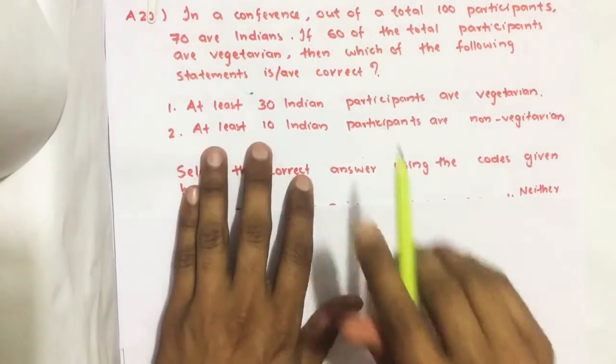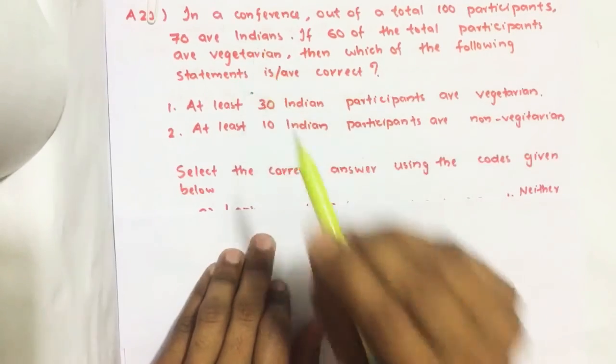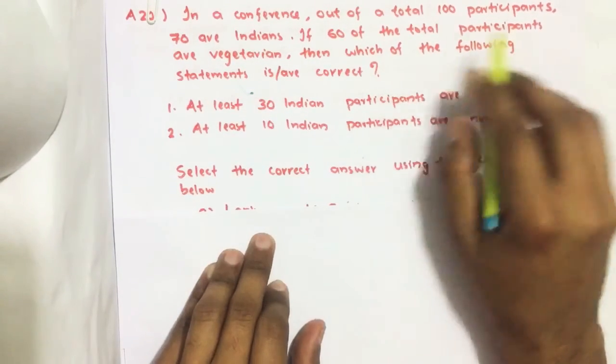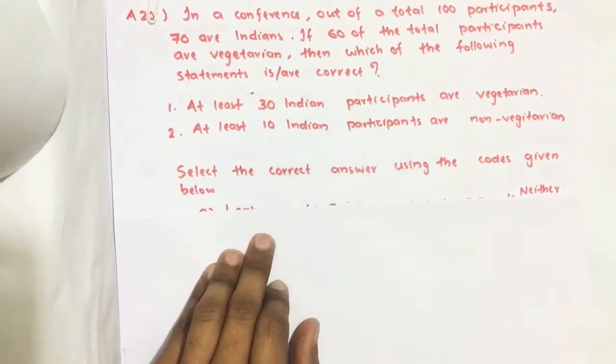In a conference, out of a total 100 participants, 70 are Indians. If 60 of the total participants are vegetarian, then which of the following statements is or are correct.